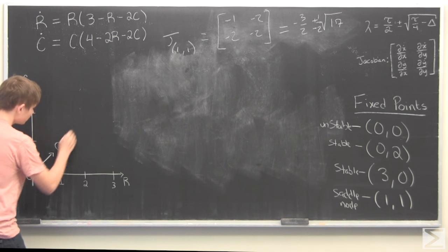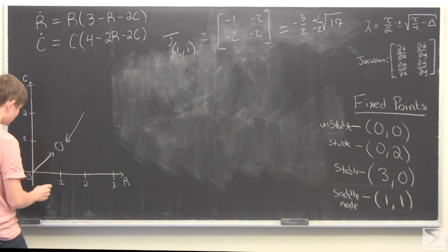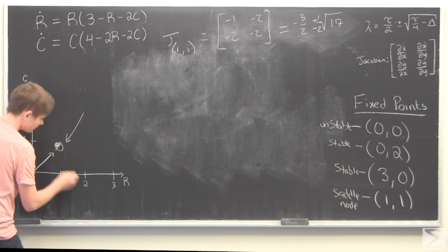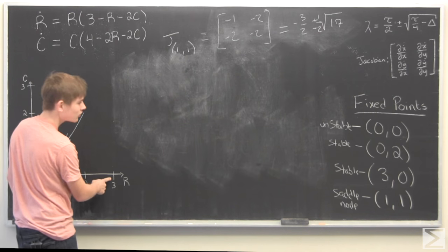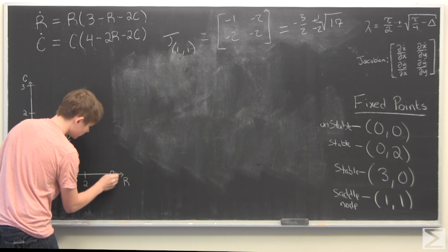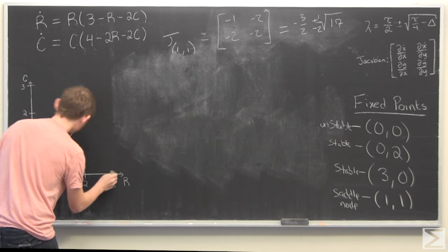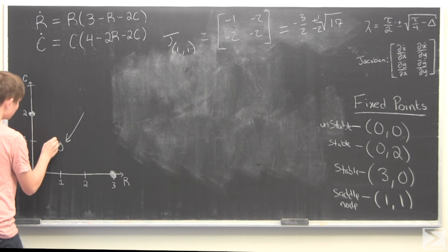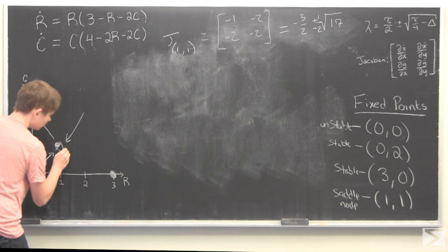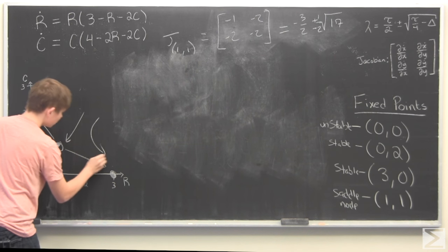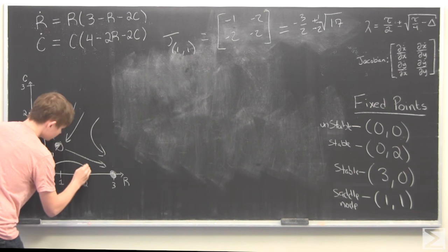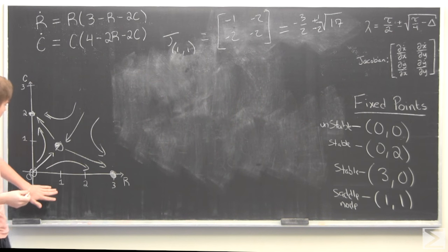And you get something that looks like this. So this is a half stable point, this is a stable point, this is a stable point, and this is not stable. So we end up with something that looks like this.